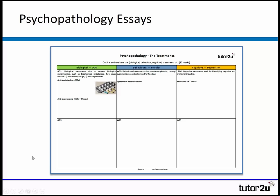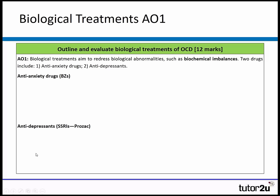I'm going to pick the hardest one — outline and evaluate the biological treatment of OCD for 12 marks. In terms of AO1, you want to acknowledge that the point of biological treatments is to redress biological abnormalities or biochemical imbalances. The two drugs used to treat OCD are anti-anxiety drugs and antidepressants.